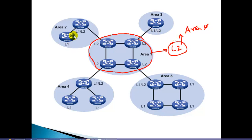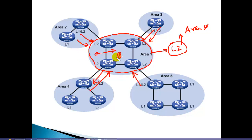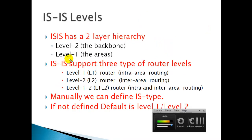To exchange routes between different areas in IS-IS, the transit area in the middle must be configured as a Level 2 area. Level 2 routers are considered backbone routers, similar to Area 0 in OSPF. This allows connecting non-backbone areas to other areas via the backbone. Level 1 areas are considered non-backbone or normal areas, similar to OSPF non-zero areas — this is a slight change in terminology when comparing IS-IS with OSPF.